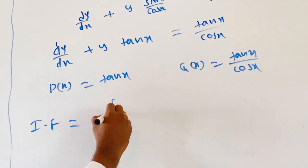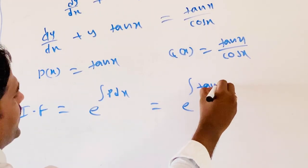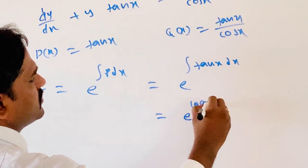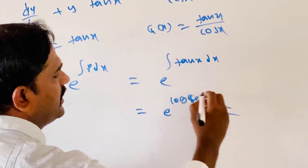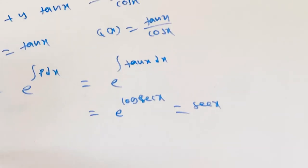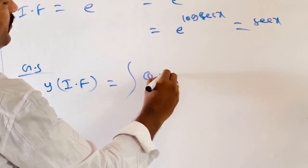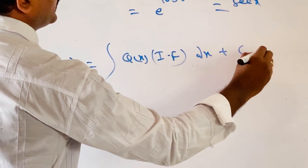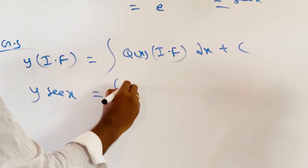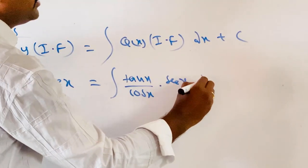The integrating factor is e^(∫p dx) = e^(∫tan(x) dx). The integral of tan(x) is log(sec x), so the integrating factor is e^(log sec x). Since e^(log of anything) equals that thing, the integrating factor is sec(x). The general solution is y·IF = ∫q(x)·IF dx + C, where IF = sec(x) and q(x) = tan(x)/cos(x).